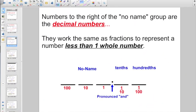So, diving right into decimals right now. Numbers to the right of the no-name group are what we call the decimal numbers. And they work the same as fractions to represent a number less than one whole. So, if here's our three no-name places, then we would put in a decimal point and you'd have the tenths place immediately to the right and the hundredths place.